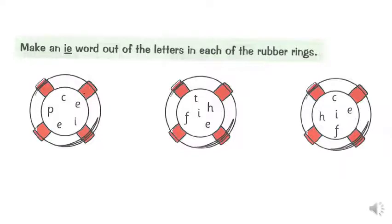For the next activity, you've got a word mixed up. Can you make an IE word out of the letters in each of the rubber rings? So what IE word can you make? Pause the video and have a go. Here are your answers. The first word was peace. The second word was thief. And the third word was chief.